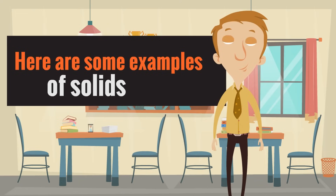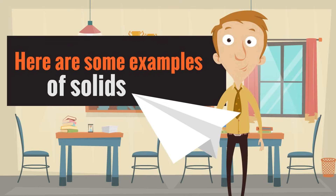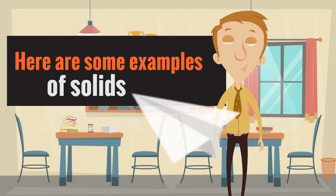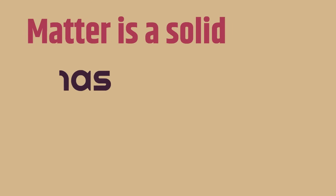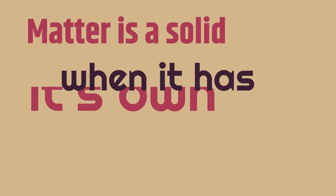Oh, I love making these. A paper airplane is an example of a solid. It is matter that has its own shape. It's a solid. Matter is a solid when it has its own shape.